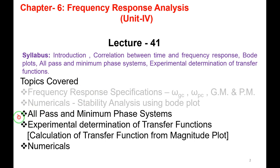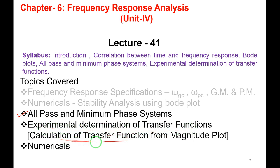Today we will get a brief idea of what all-pass and minimum phase systems are. Next, we'll see the calculation of transfer function from the magnitude plot. The Bode plot consists of both a magnitude plot and a phase plot, so we'll see how to get the transfer function from the magnitude plot. In the syllabus this is called 'experimental determination of transfer function.' We'll also solve numericals based on this.